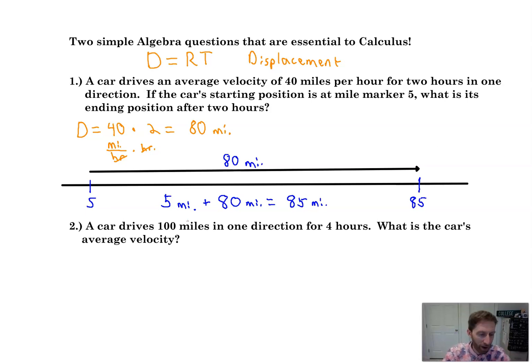All right, let's look at the second problem. A car drives 100 miles in one direction for four hours. What is the car's average velocity? Again, average velocity is how fast the car is traveling and in what direction. We're assuming it's going in one direction here. So again, we use distance or displacement in this case is the same equals rate times time. So the distance in this case is 100 miles and that is equal to the rate. We don't know the rate. So we leave that as a variable times the time we've been traveling for four hours. So that is equal to four.